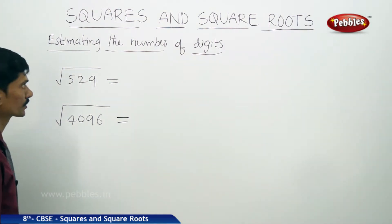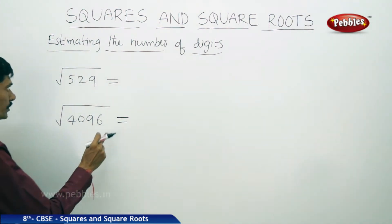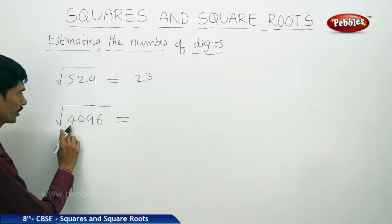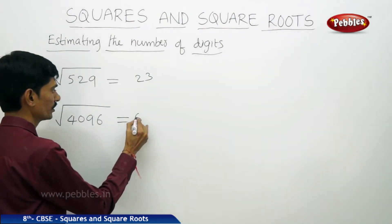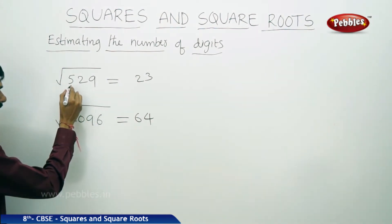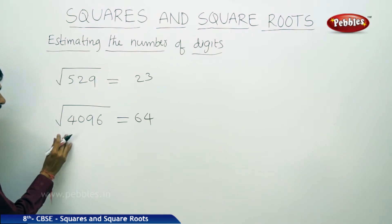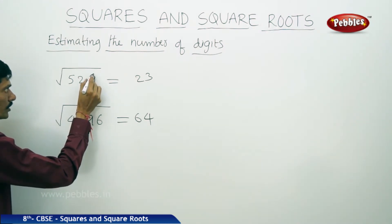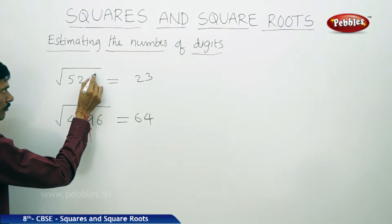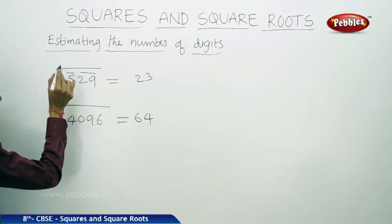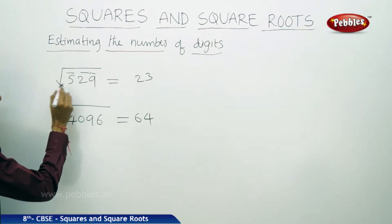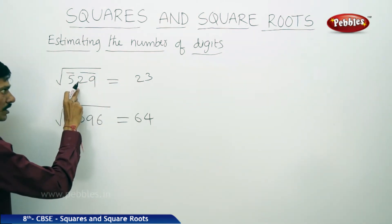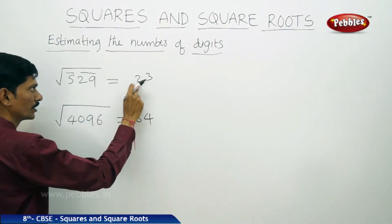Now let us go to the next topic: estimating the number of digits in the square root of a given number. The square root of 529 is 23 and the square root of 4096 is 64. While finding the square root by division method, we use the bar from unit's place over every two digits from right to left. For 529, how many bars are used? There are 2 bars, and so in the square root there will be 2 digits. In the square root 23, there are also 2 digits.